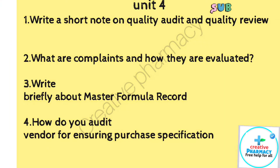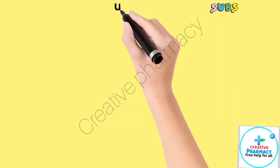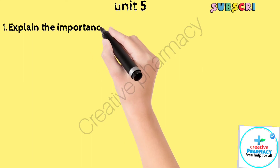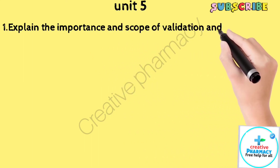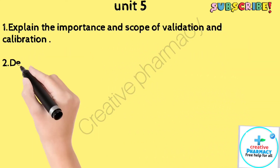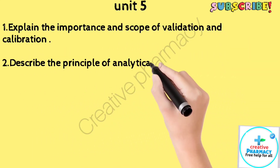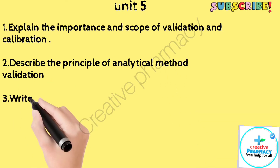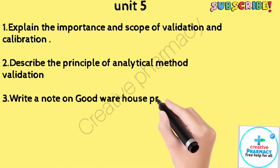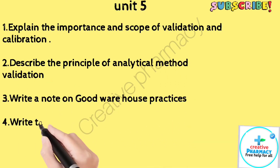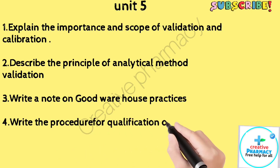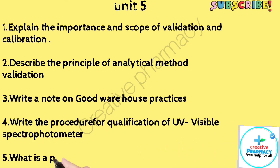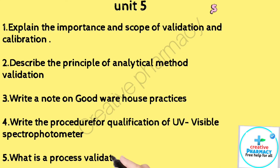Unit 5. Question 1: Explain the importance and scope of validation and calibration. Question 2: Describe the principle of analytical method validation. Question 3: Write a note on good warehouse practices. Question 4: Write the procedure for qualification of transport visible spectrophotometer. Question 5: What is a process validation master plan?